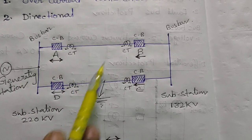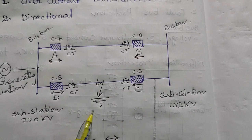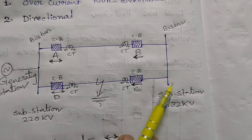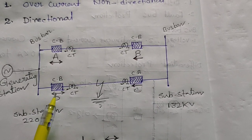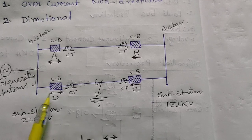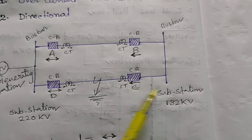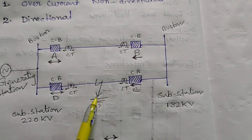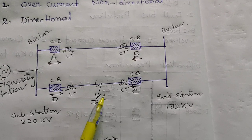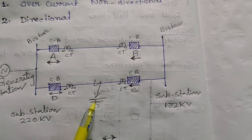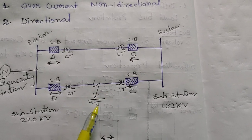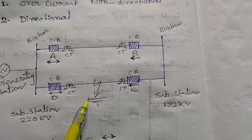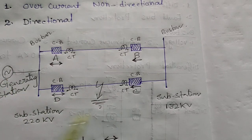Suppose this line has a fault — for example, snapping of the conductor. This is a 132KV line from the 220KV switchyard to the 220KV/132KV transformer, then feeding to the 132KV substation. Suppose the incoming feeder one has a fault or snapping of a conductor — that may be R phase, Y phase, three-phase short circuit, single phase to earth, three-phase short circuit, or double phase to earth.